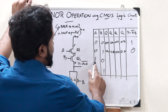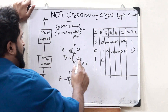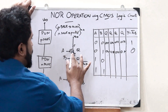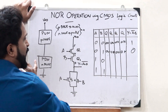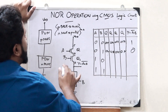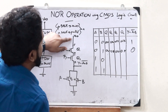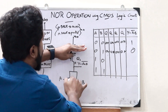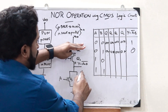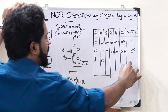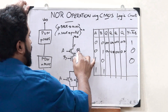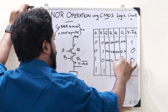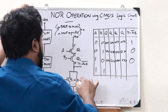Next, let us see when A is 1 and B is 0. When A=1, Q1 is off because in a PMOS transistor a high input turns the transistor off. Therefore, when voltage comes in it breaks off right there and does not go to the bottom portion of this circuit. Therefore, the output is 0. In the pull-down network, Q3 is on because A=1, and Q4 is off because B=0.